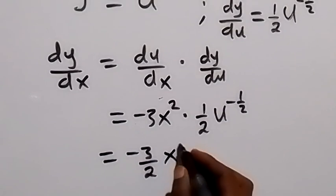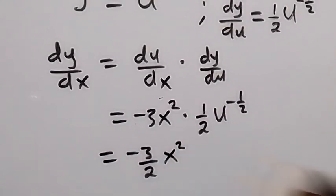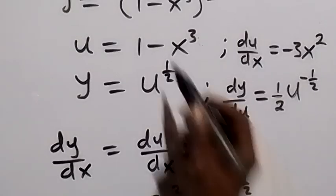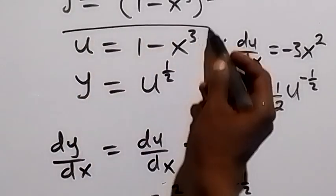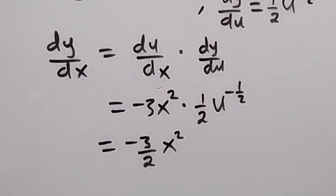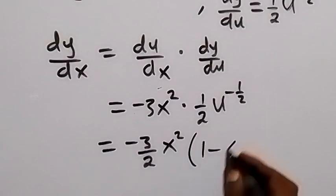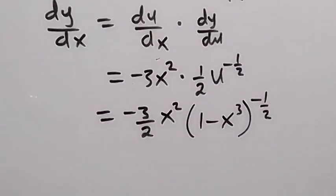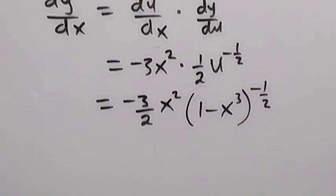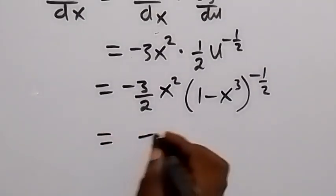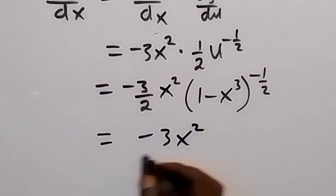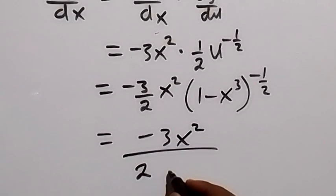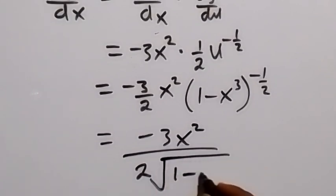We have minus 3 over 2 times x squared, then u is the same as 1 minus x cubed, so we substitute back. This gives us 1 minus x cubed raised to power minus half. So therefore we have the final answer, which we can also write as minus 3x squared divided by 2 root 1 minus x cubed.